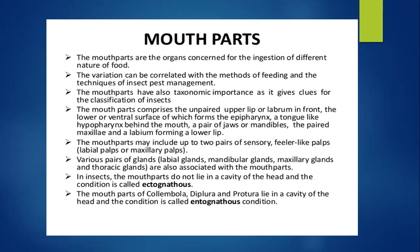The mouthparts comprise the unpaired upper lip known as labrum, located at the front; a lower lip on the ventral surface forming the epipharynx; a tongue-like hypopharynx behind the mouth; a pair of jaws also known as mandibles; the paired maxillae; and a labium forming the lower lip. The mouthparts may include up to two pairs of sensory feeler-like palps called labial palps or maxillary palps.